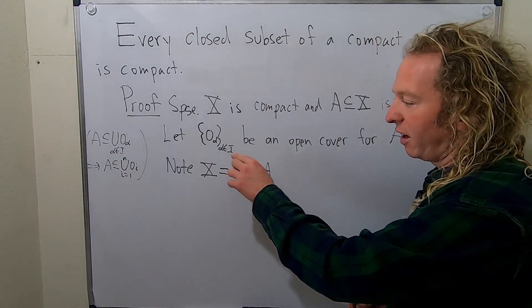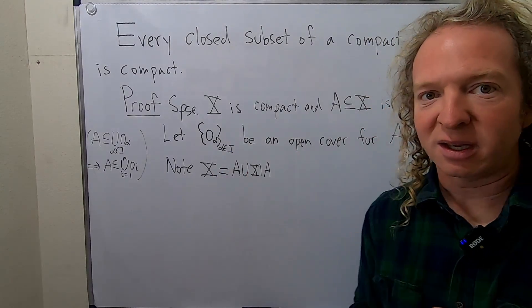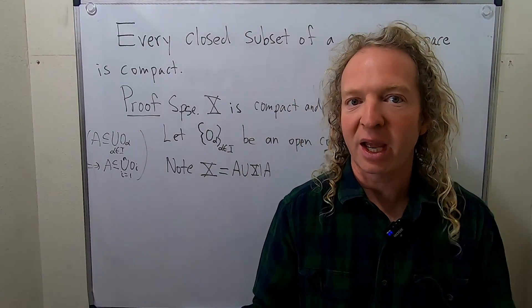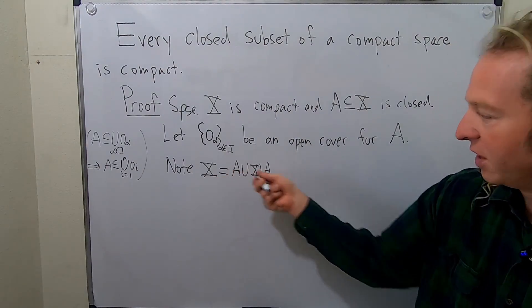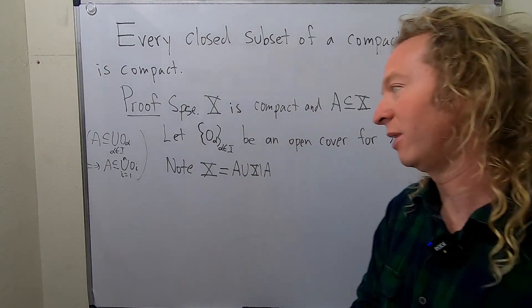Because every element in X is either in A or it's not in A. Therefore, it's in this union, right? If it's in A, it's here. And if it's not in A, it's here. So it's in the union. You can always do that. It's really, really, really powerful.